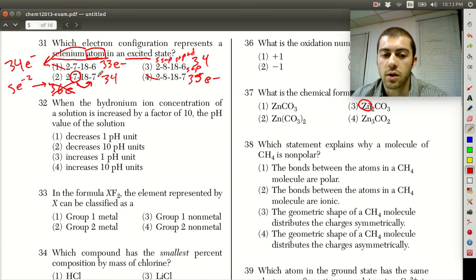And what happened to it was it got promoted to this higher energy level. We had 2, 8, 18, and 6 here, and now we have 2, 7, 18, and 7. So one of these in the second level went to the fourth level. Promoting an electron from a lower energy level to a higher energy level makes it an excited state. So the answer would be answer choice 2 for number 31.